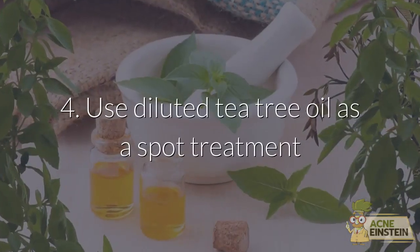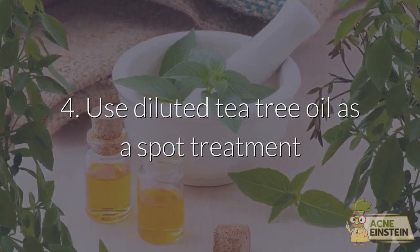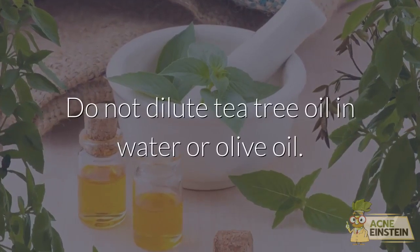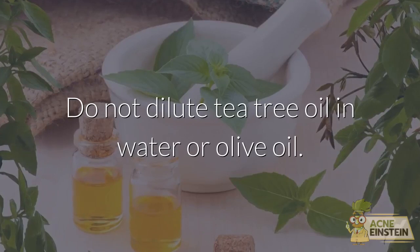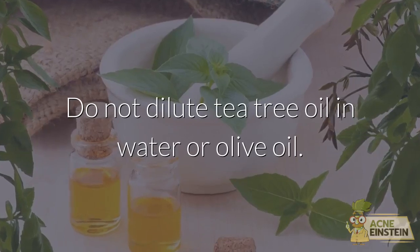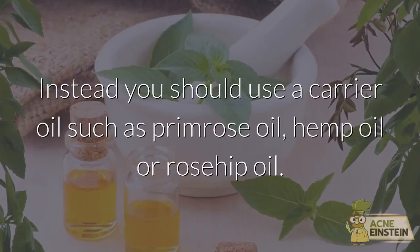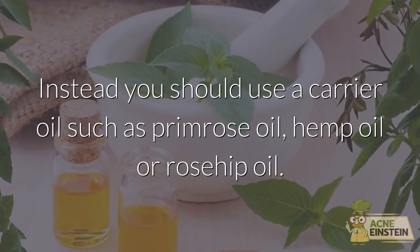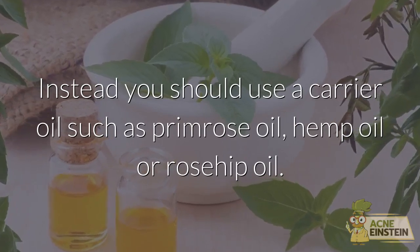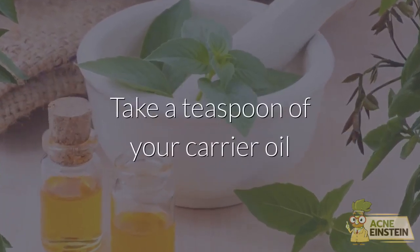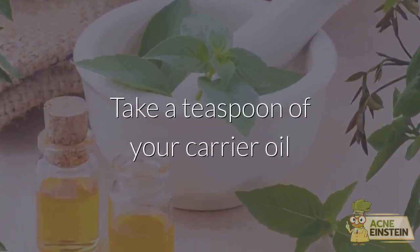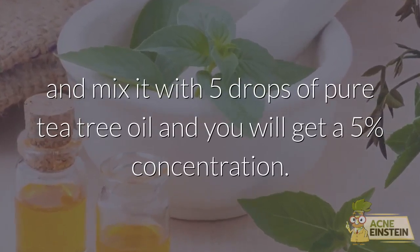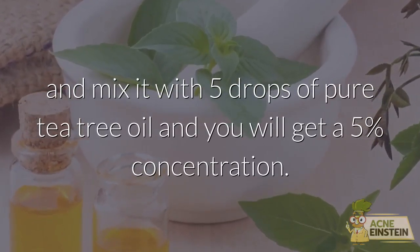To use diluted tea tree oil as a spot treatment, do not dilute tea tree oil in water or olive oil. Instead, use a carrier oil such as primrose oil, hemp oil, or rosehip oil. Take a teaspoon of your carrier oil and mix it with 5 drops of pure tea tree oil, and you will get a 5% concentration.